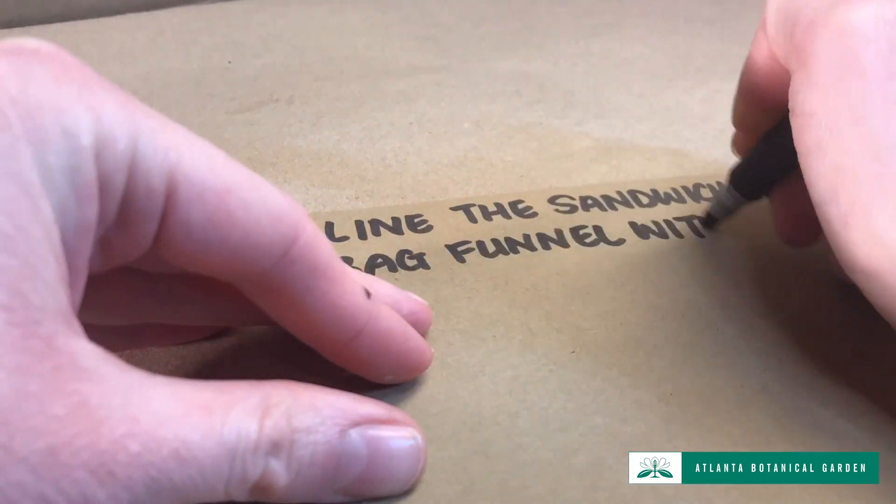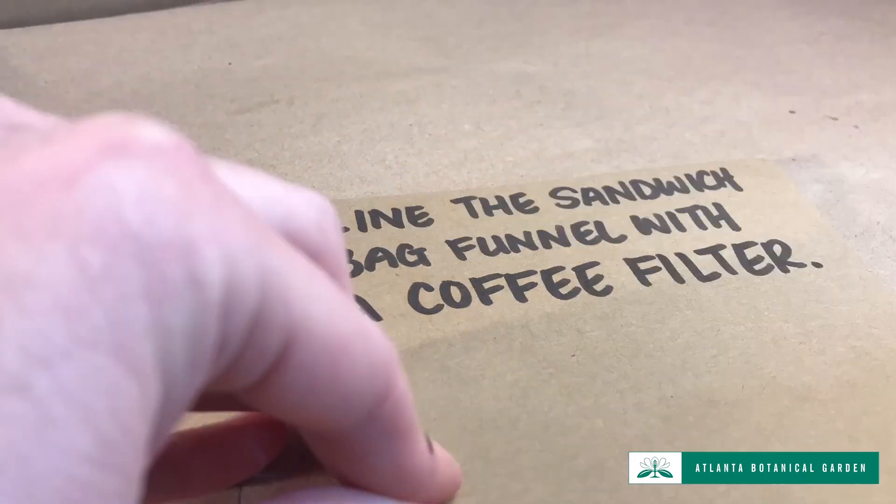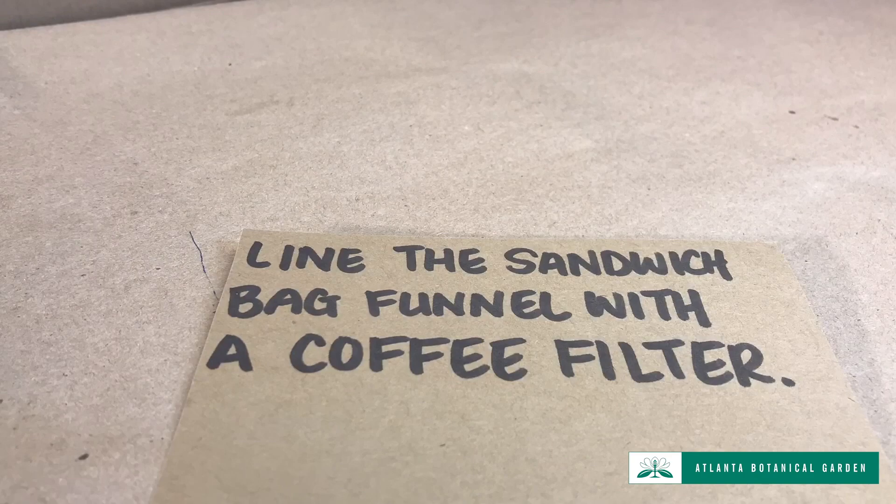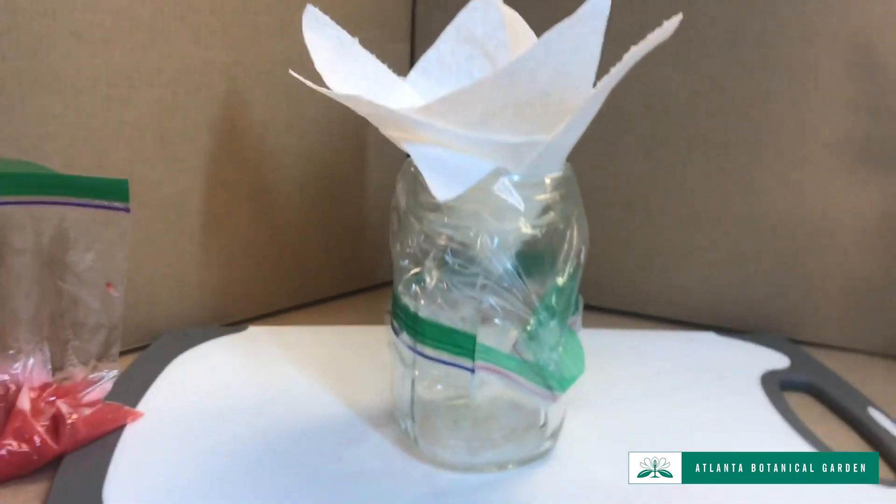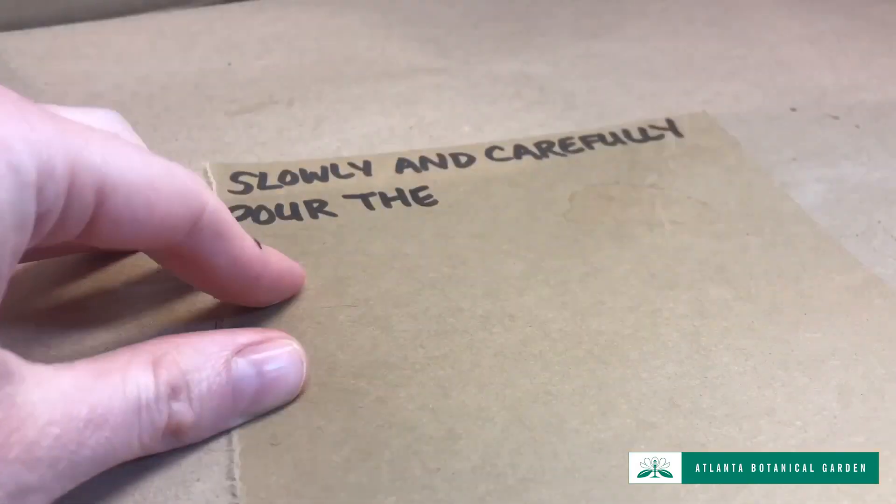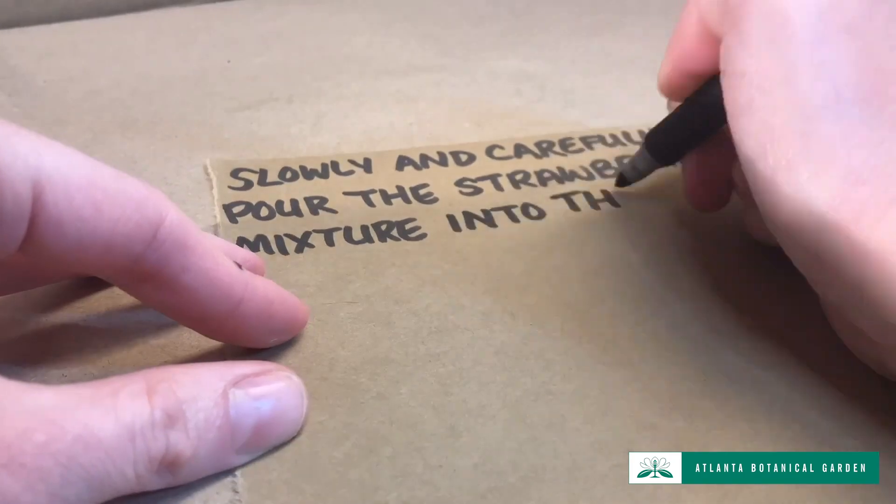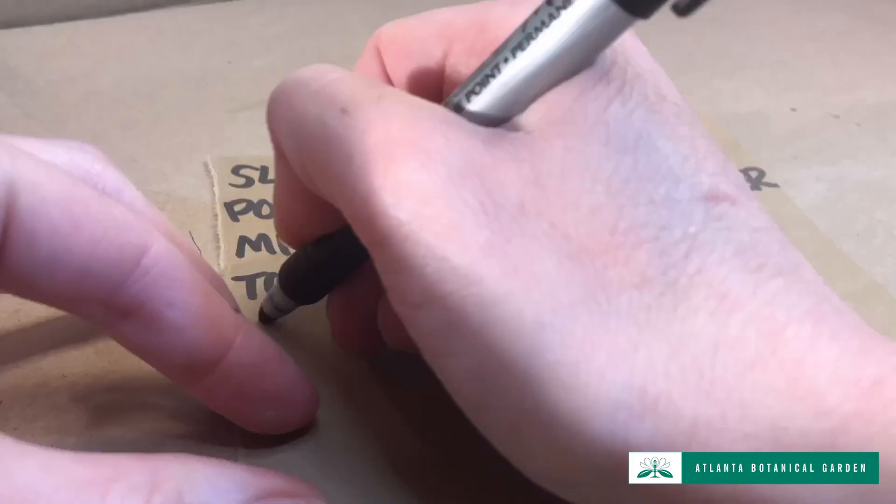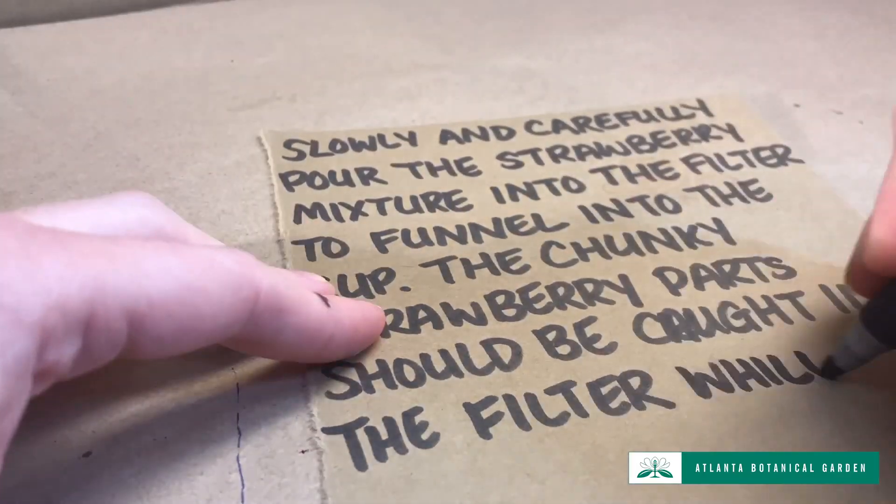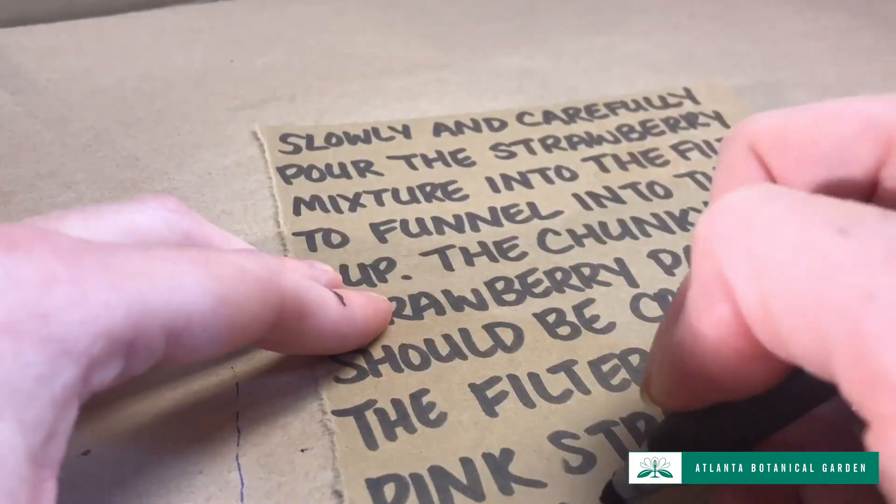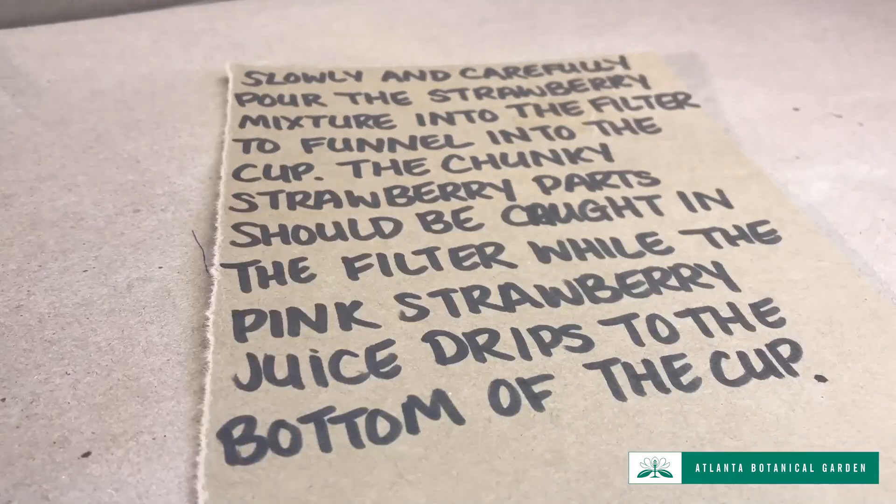Line the sandwich bag funnel with a coffee filter. Or, if you are using paper towels, overlap the pieces to line the funnel and cover the bottom hole. Slowly and carefully pour the strawberry mixture into the filter to funnel into the cup. The chunky strawberry parts should be caught in the filter while the pink strawberry juice drips to the bottom of the cup.